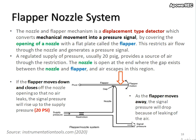Here we have the signal pressure. The nozzle and flapper mechanism is a displacement-type detector which converts mechanical movement into pressure signals. It is achieved by covering the opening of a nozzle with a flat plate called a flapper. This restricts air flow through the nozzle and generates a pressure signal. A regulated supply pressure, usually 20 psig, provides a source of air through the restriction.